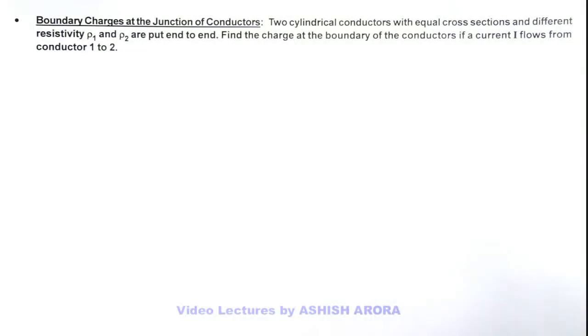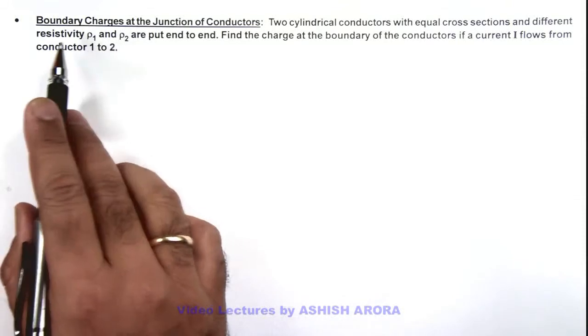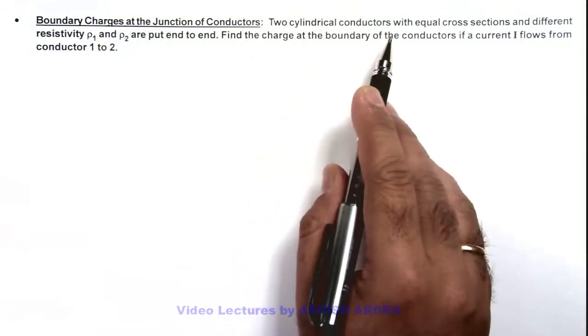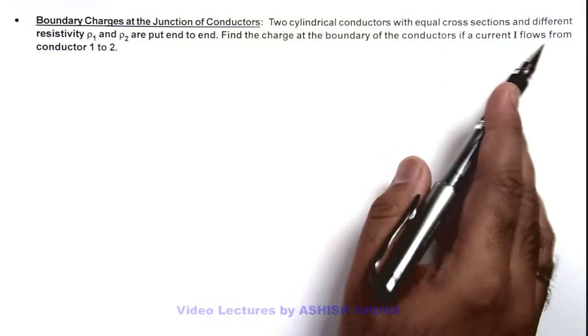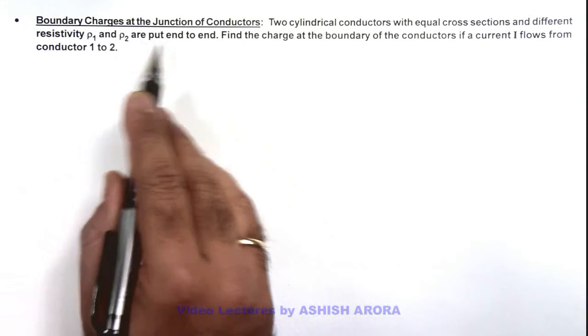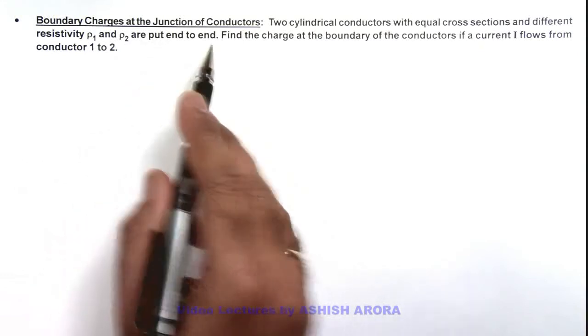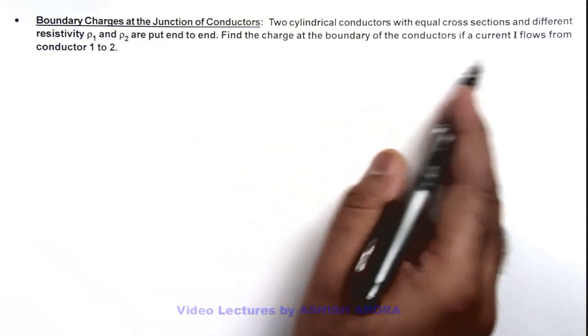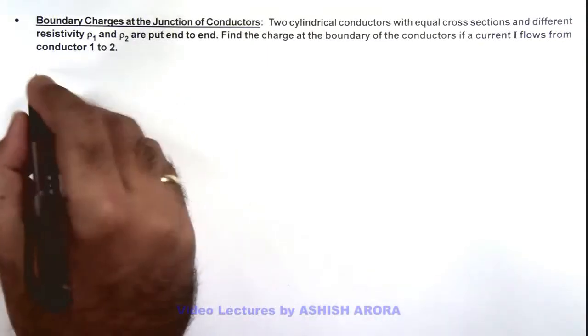In this illustration, we'll demonstrate the boundary charges at the junction of conductors. Here we are given two cylindrical conductors with equal cross-section and different resistivity ρ₁ and ρ₂ that are put end to end. We are required to find the charge at the boundary of the conductors if a current i flows from conductor 1 to 2.